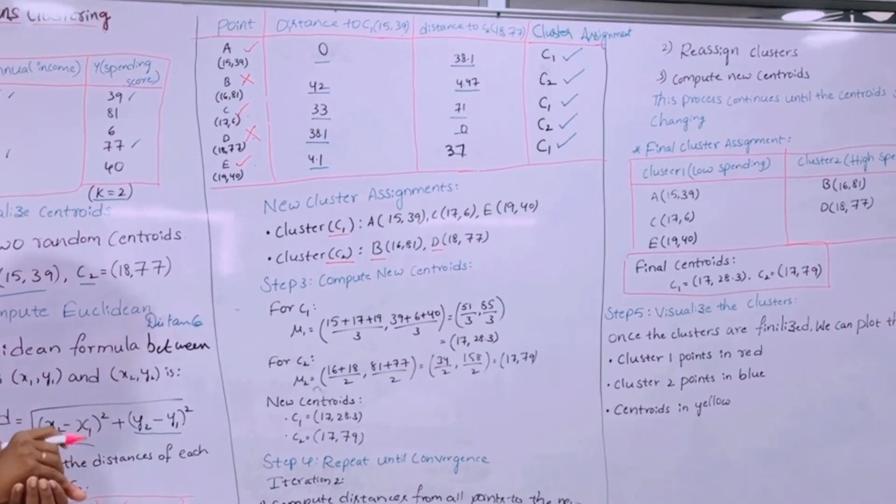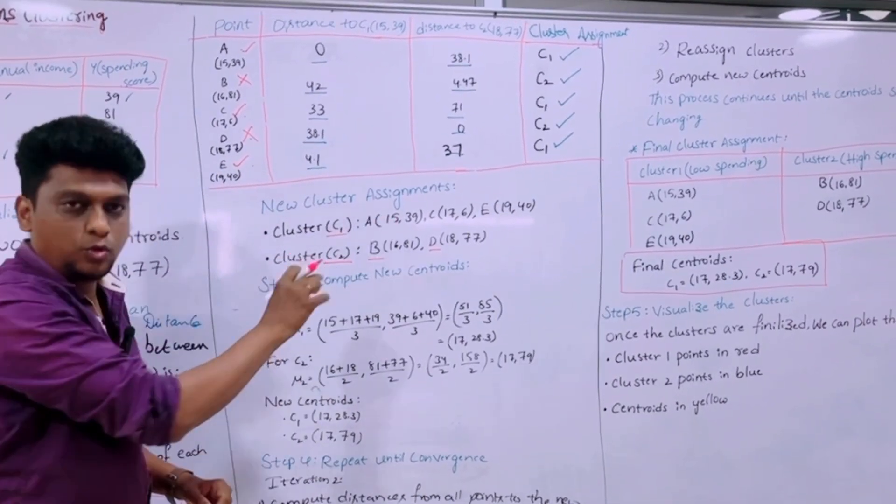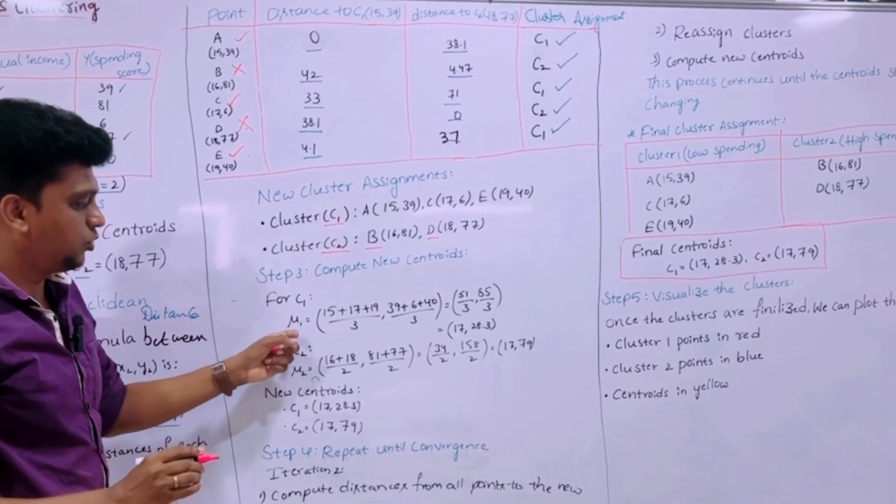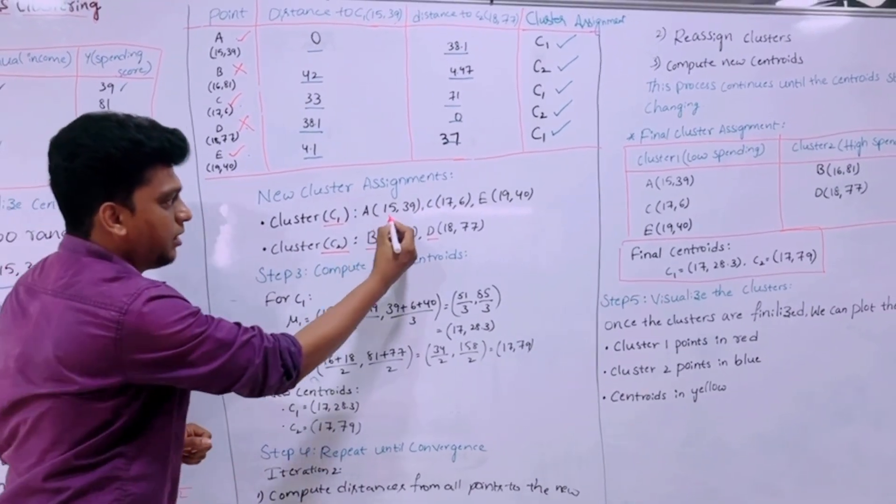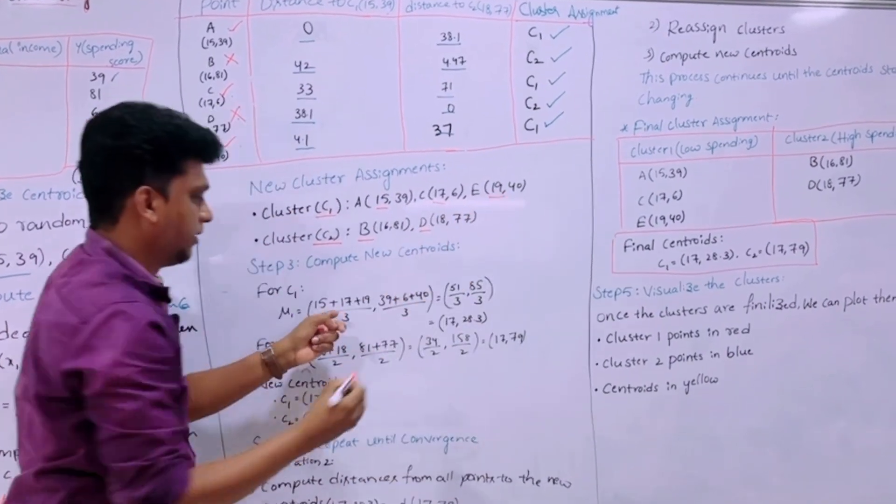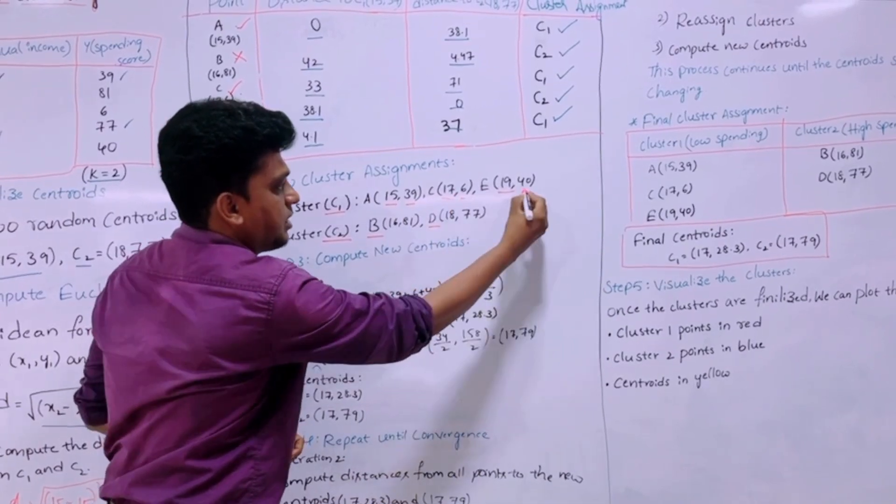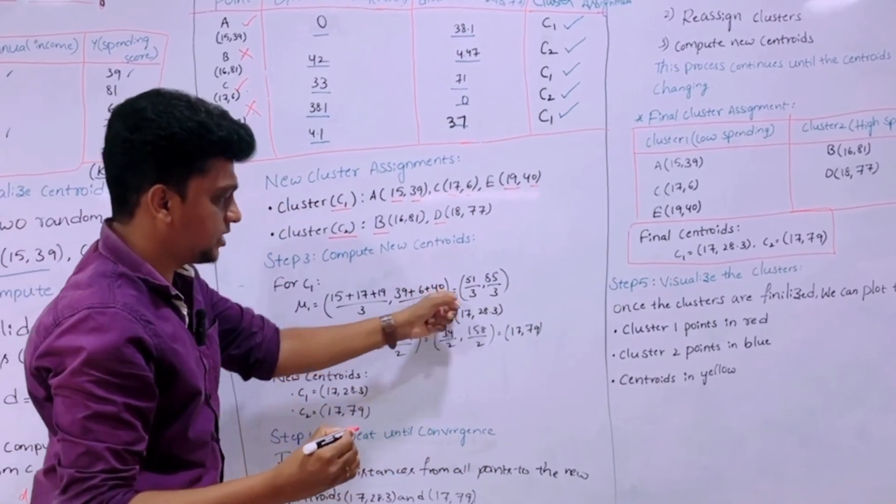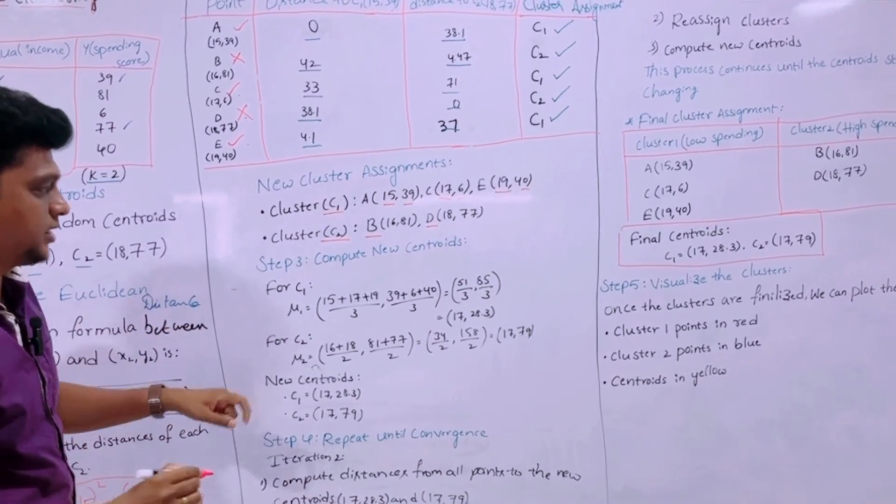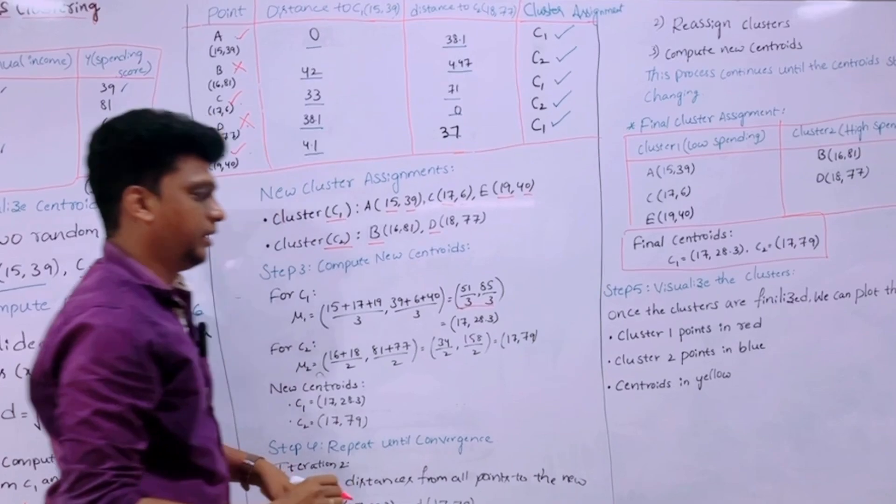Now in step 3 we have to compute the new centroids based on this new cluster assignment. So for C1, if we have to calculate mu1 as the mean, first we should take 15, 17, 19: 15 plus 17 plus 19 divided by 3, comma 39, 6, 40: 39 plus 6 plus 40 divided by 3. So this is how we are computing the new centroids. So it is finding us 51 by 3 comma 85 by 3.